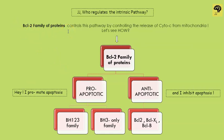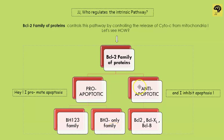The answer is the Bcl-2 family of proteins — a huge family which acts as a remote control of this pathway. They are divided into two parts: pro-apoptotic, which promote apoptosis, and anti-apoptotic, which inhibit apoptosis. Pro-apoptotic proteins are subdivided into two families: the BH123 family and the BH3-only family. The anti-apoptotic ones are Bcl-2, Bcl-xL, and Bcl-b. We'll see their function and remember them by what they do.